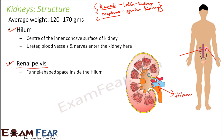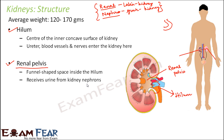The renal pelvis is a funnel-shaped space inside the hilum. The brown colored funnel-shaped structure you see is the renal pelvis. Its purpose is to receive urine from the kidney nephrons. Urine is produced inside the kidney by structures called nephrons, then gets collected at the renal pelvis, and from there goes through the ureter to the urinary bladder.